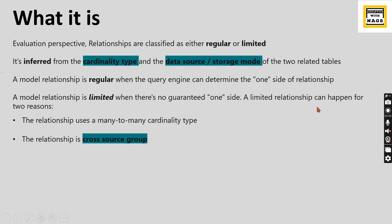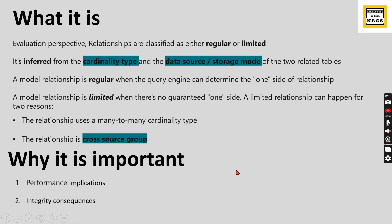You can define a relationship based on cardinality type, data source or storage mode, and cross source group — and your relationship is classified as regular or limited accordingly. This is important because it implies performance. If you have a regular relationship, your queries will be performant and efficient. If you have a limited relationship, there are also integrity consequences.